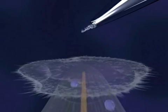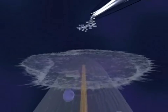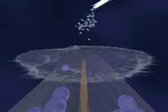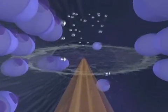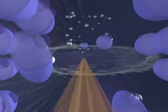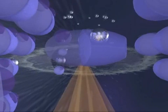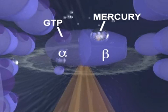When mercury ions are introduced into the culture medium, they infiltrate the cell and bind themselves to newly synthesized tubulin molecules. More specifically, the mercury ions attach themselves to the binding site reserved for guanosine triphosphate, or GTP, on the beta subunit of the affected tubulin molecules.